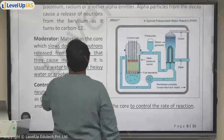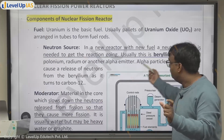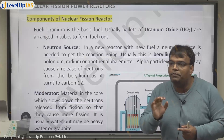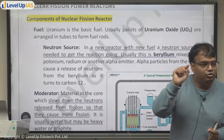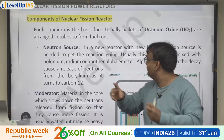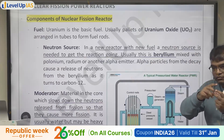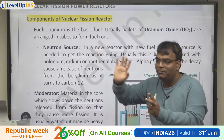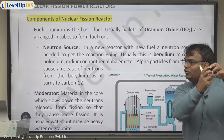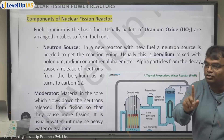Regarding the neutron source: we have beryllium and polonium or radium. These alpha emitters emit alpha particles. An alpha particle is basically a helium nucleus — two neutrons and two protons. When this alpha particle interacts with beryllium, beryllium converts into carbon-12 and in the process a neutron is released. So beryllium is not the neutron source by itself — beryllium interacts with the alpha particle and the combination produces the neutron. That is how the neutron source works in a new reactor.